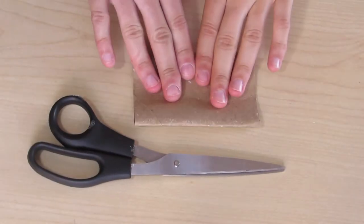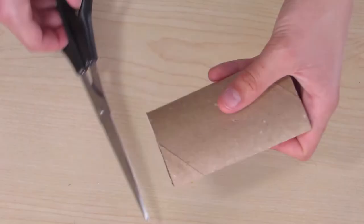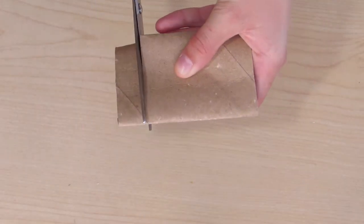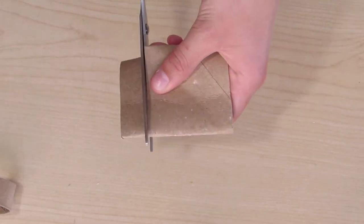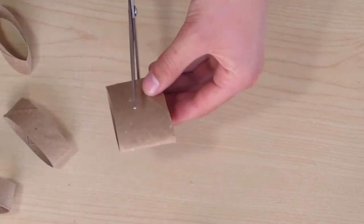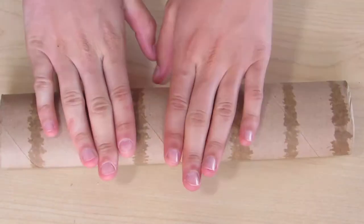To begin, flatten the roll and cut it into small pieces about three-quarters of an inch thick. You should get five or six pieces from a regular toilet paper roll. You can do the same with paper towel rolls as well.